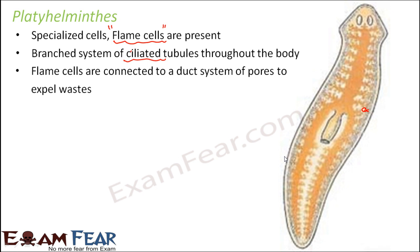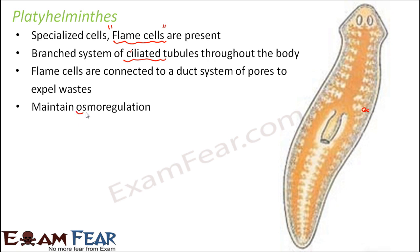That is how Platyhelminthes excrete. These flame cells also help to maintain osmoregulation — the ionic balance of the body — maintaining the correct water and ionic balance. Whenever excretion happens, it not only takes out waste materials but also the excess water and excess ions which might be present in the body.